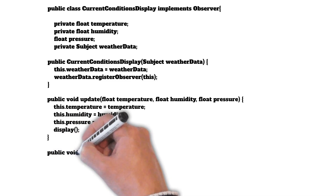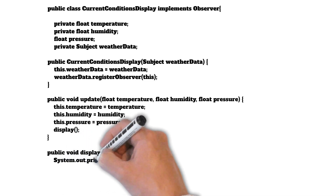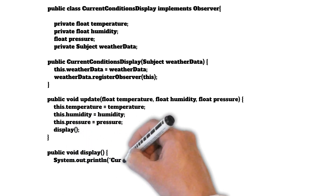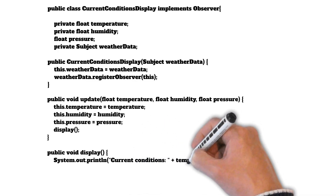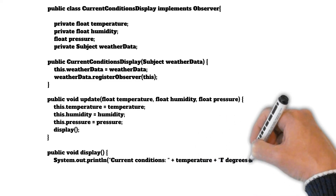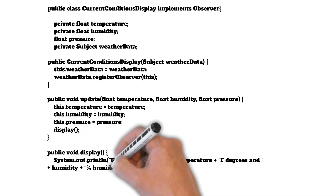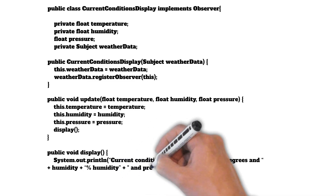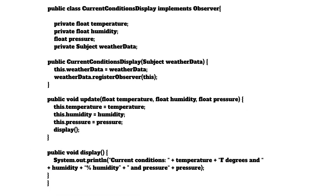Different types of display methods can display this information differently based on their type. The only thing common with all the observers is that their update method will be called every time there is a change in the temperature, humidity, or pressure values of the subject object. What they do with the updated value is up to them, but they will always get notified.